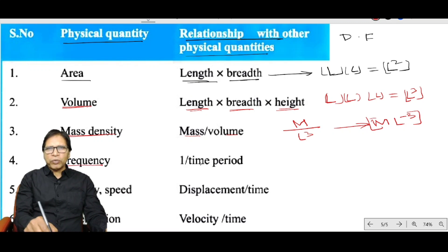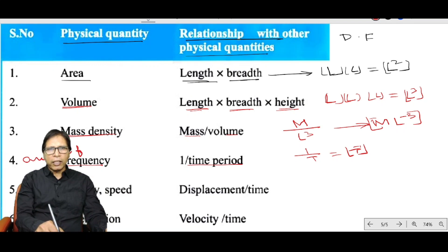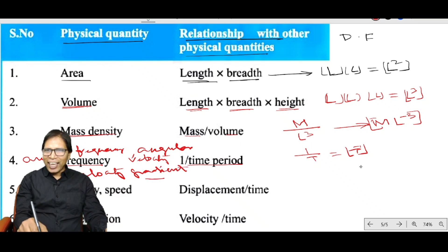Frequency equals 1 divided by time period, which is T⁻¹. Other quantities like angular frequency, angular velocity, and velocity gradient all have the same dimension as frequency, which is T⁻¹.